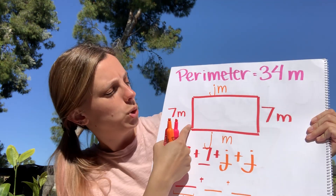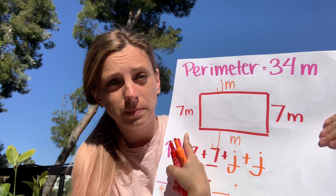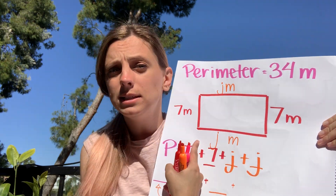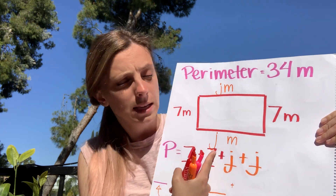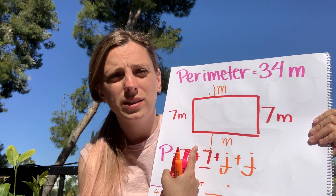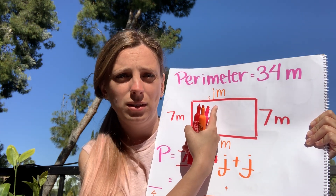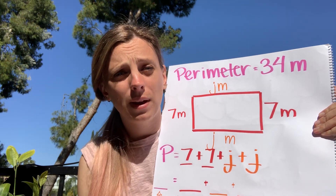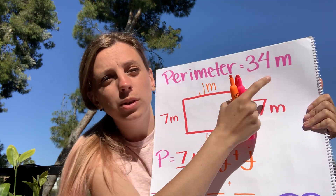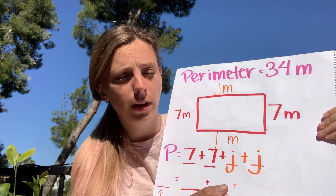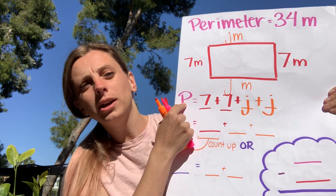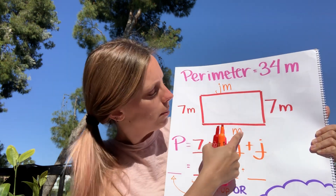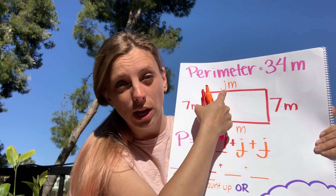The next problem shows us a rectangle with two missing sides. They've told us the width is seven meters, so we know the other width must also be seven meters. They didn't tell us the length — they named it J — and the opposite side is also called J because whatever J is, it's going to be the same on both sides. The perimeter is 34 meters. So perimeter equals 7 plus 7 plus J plus J.